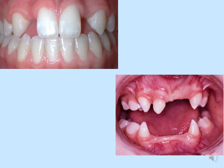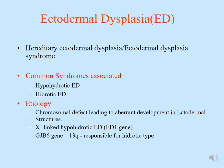Continuing with hypodontia, here are photographs of cases where single teeth are missing and where multiple teeth are missing. When multiple teeth are missing with specific morphology of the remaining teeth, we need to think about conditions associated with hypodontia. One of them is called ectodermal dysplasia, also called hereditary ectodermal dysplasia or ectodermal dysplasia syndrome. The common syndromes associated are hypohidrotic or hidrotic ectodermal dysplasia.